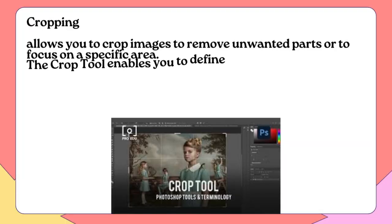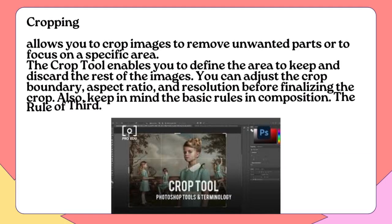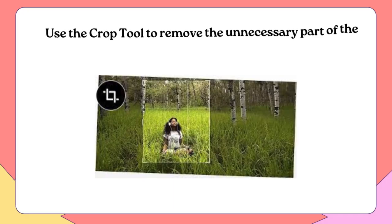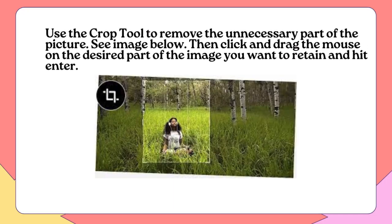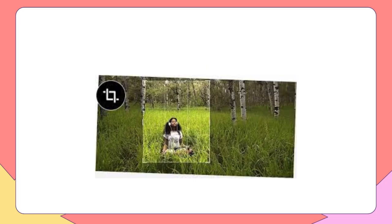Cropping: Allows you to crop images to remove unwanted parts or to focus on a specific area. The crop tool enables you to define the area to keep and discard the rest of the image. You can adjust the crop boundary, aspect ratio, and resolution before finalizing the crop. Also, keep in mind the basic rules in composition — the rule of thirds. Use the crop tool to remove the unnecessary part of the picture. See image below, then click and drag the mouse on the desired part of the image you want to retain and hit Enter.